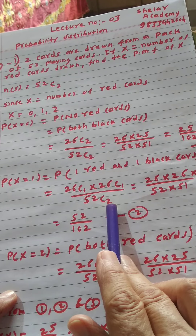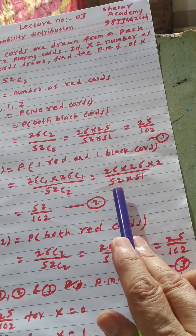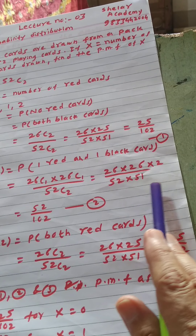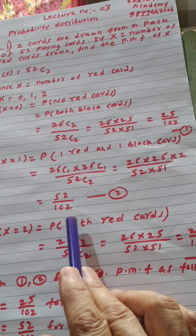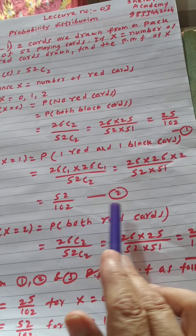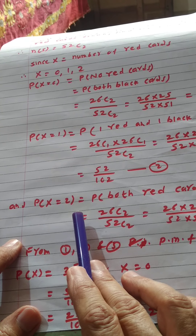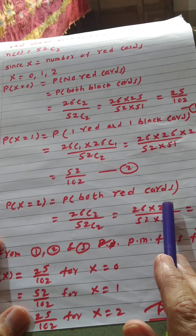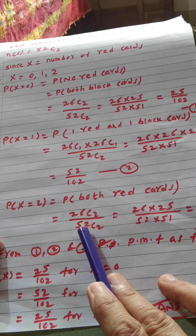Now P(X=0) — that means when there is no red card. That probability is both cards are black cards. Black cards are 26, and two black cards can be drawn in 26C2 ways. Therefore, 26C2 upon 52C2 equals 26×25 divided by 52×51. The 2 factorial cancels from numerator and denominator, giving 25 by 102.